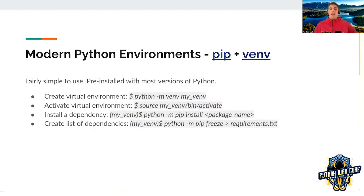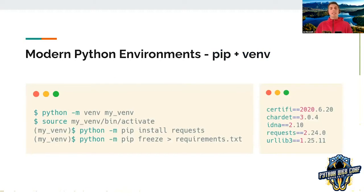Once you have Python installed with all the versions you need, you need to manage your virtual environments and dependencies. The first tool you can use is the combination of pip and venv. It's fairly simple to use and usually pre-installed with most Python versions. You can use it to create virtual environments, activate them, install dependencies, and create a list of dependencies inside a requirements.txt file. Your fellow developer can clone a Git repository and install the same dependencies to start working on the same project.